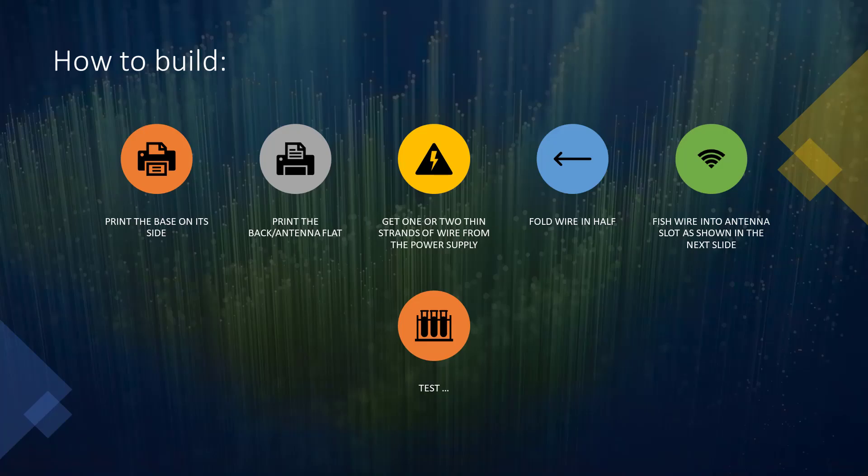Here are the basic instructions. Print the base on its side, then print the antenna back. At regular quality, three hours. If you really know what you're doing at the printer, you could probably do them in an hour. Then you're going to get one or two strands of wire from a power supply. Fold the wires in half. Then you're going to fish the wire into an antenna slot. And then you test it - see if it works.